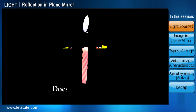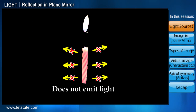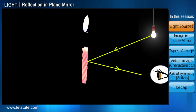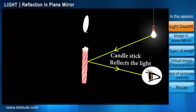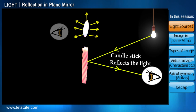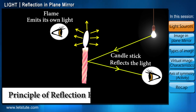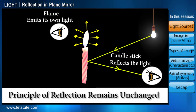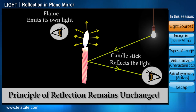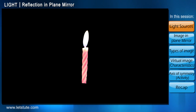The candlestick, however, does not emit its own light — instead, we see it only because of the light reflected off it. Whether the light is emitted by an object or given off by an object, the process and principle of reflection remains unchanged. We'll understand this by getting back to the burning candle.